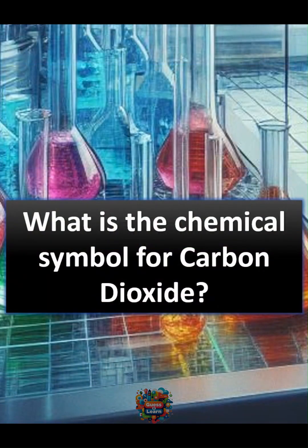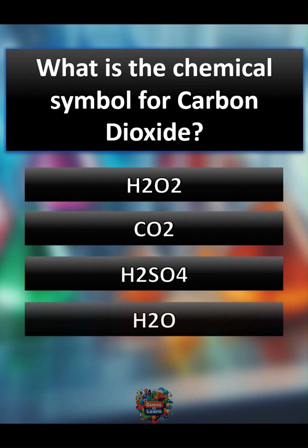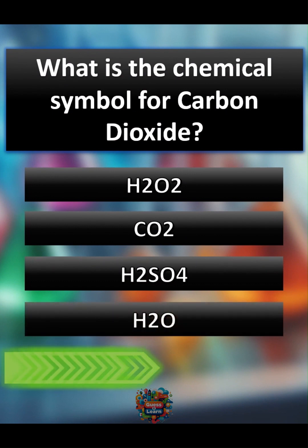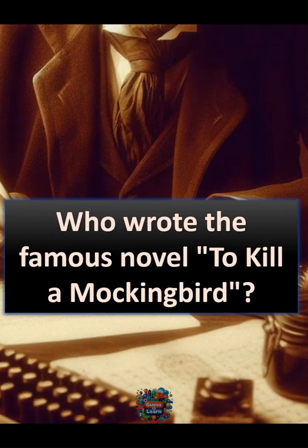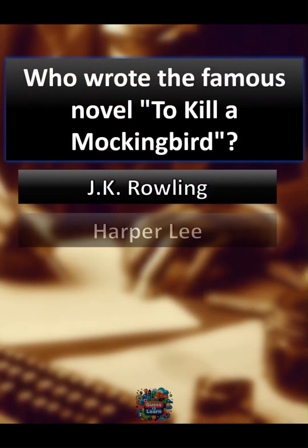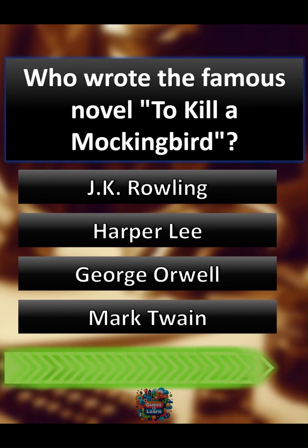What is the chemical symbol for carbon dioxide? A H2O2, B CO2, C H2SO4, D H2O. Correct answer: B CO2.